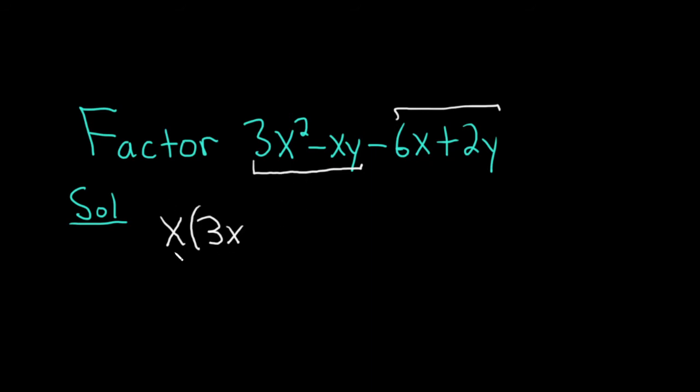because x times x is x squared. And then what do you multiply by x in order to get negative xy? Well, just minus y. And you can check, x times 3x is 3x squared, x times negative y is negative xy.